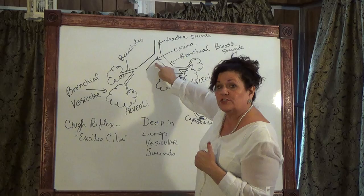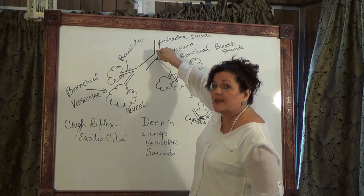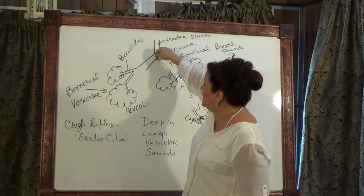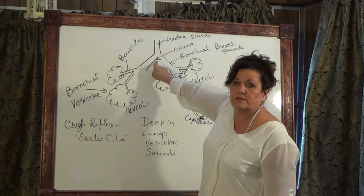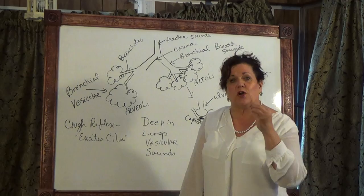The carina is an important landmark to know, because when we intubate somebody with a breathing tube, we put the tube in and then do a chest x-ray. Sometimes we have to back it up a few centimeters to make sure we're not bumping into the carina or pushing it down one side of the lung. So the carina is an important landmark where our lungs bifurcate at the bronchi.